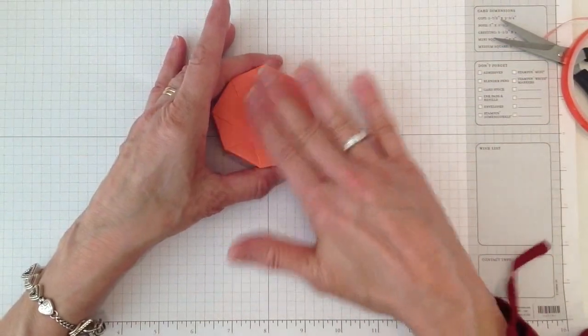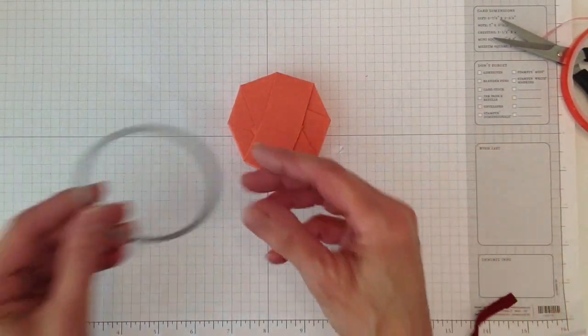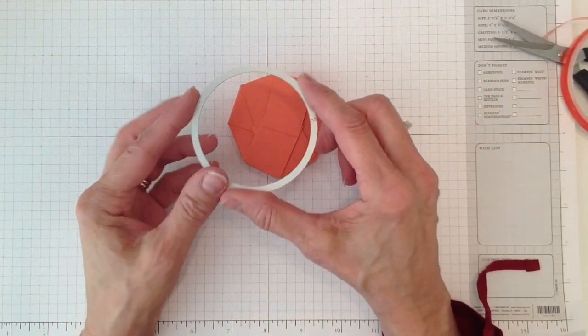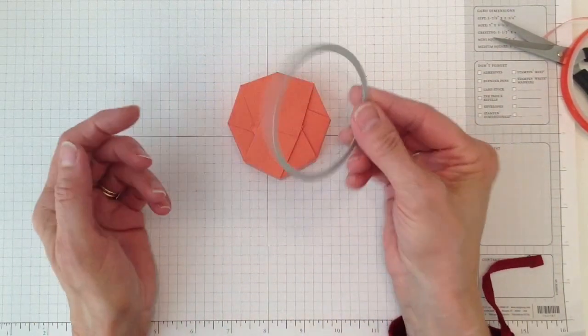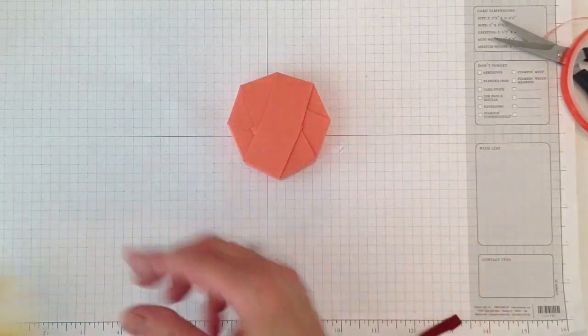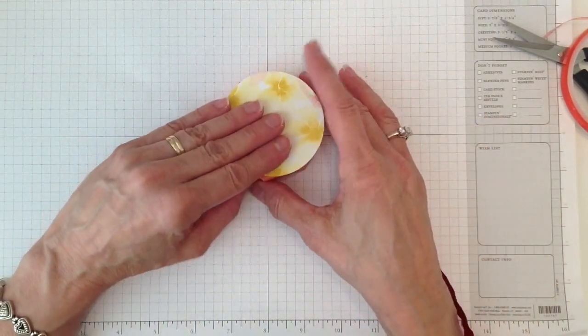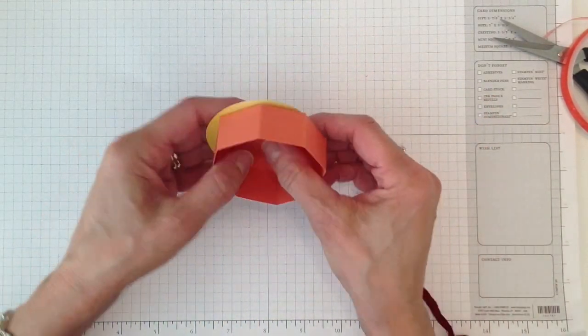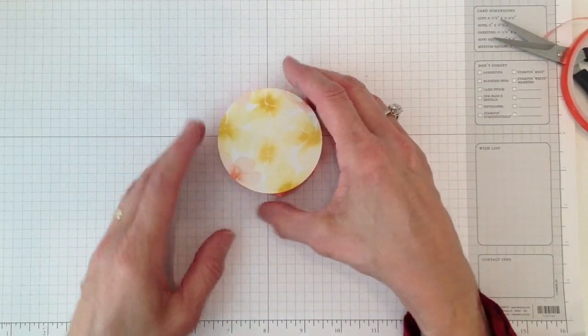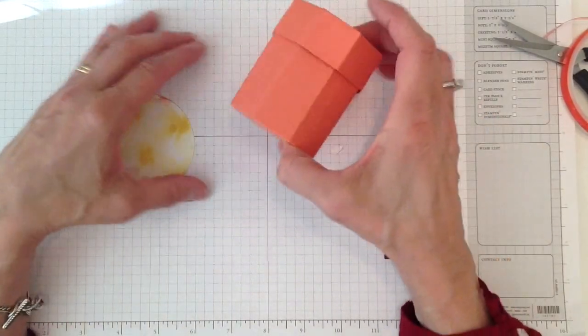And this part we're going to cover with a, I use this. It's the sixth circle in the circle collection of the framelits from Stampin' Up. And that's the size you're going to need for the top part. And see, I cut that. And what we're going to do is we're just going to set that on there and then I'm going to trim away the other part. And that seems to fit really good. But that top fits right on top like that.